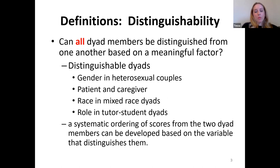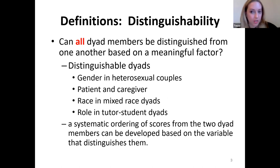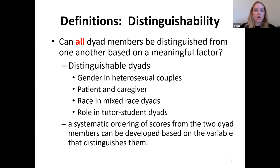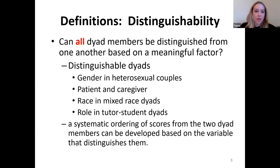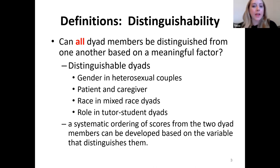The first thing you might think about when you collect dyadic data is who are the two people going into your dyad. There's an issue in dyadic analysis called distinguishability, which basically means that when you collect a sample of dyads, those two members can either be distinguished from each other on a meaningful trait or factor, or they cannot be distinguished on that meaningful factor.